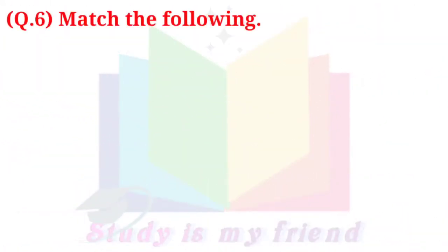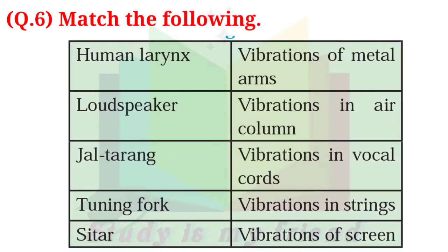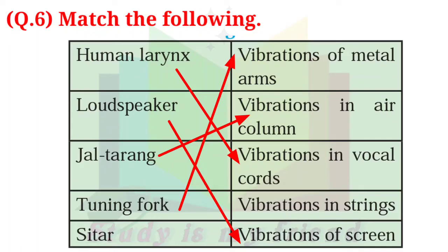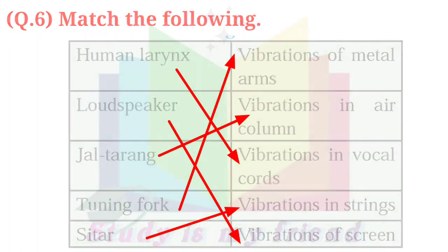Question 6. Match the following. Human larynx — Vibration in vocal cords. Loudspeaker — Vibration of screen. Jal Tarang — Vibrations in water. Tuning fork — Vibration of metal arms. Sitar — Vibrations in strings.